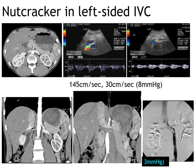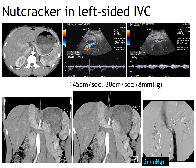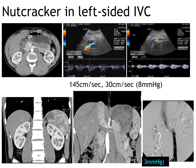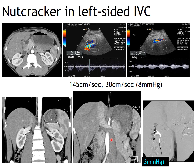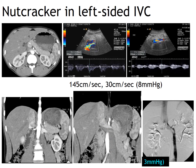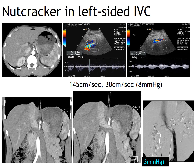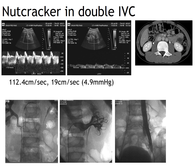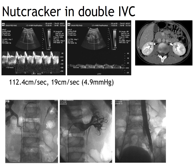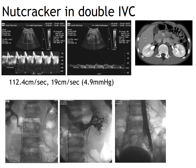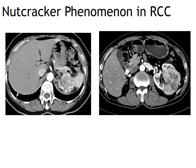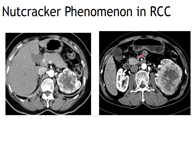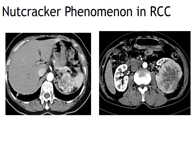Here is a case of nutcracker syndrome in left-sided IVC. A large amount of venous blood from the left lower extremity crosses the aorto-mesenteric portion, hindering venous flow from the left kidney. In this patient, velocity was 145 cm/sec and the pressure gradient was 3 mmHg. This is also a case of nutcracker syndrome in double IVC, with a velocity of 112 cm/sec and about 5 mmHg pressure gradient. Two patients with renal carcinoma of the left kidney show nutcracker phenomenon with jetting contrast due to increased venous flow from hypervascular renal carcinoma.